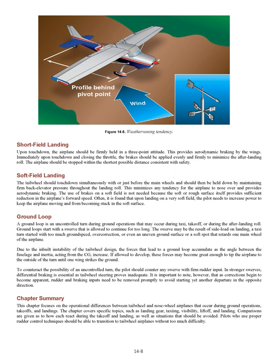Ground Loop: a ground loop is an uncontrolled turn during ground operations that may occur during taxi, takeoff, or during the after-landing roll. Ground loops start with a swerve that is allowed to continue for too long. The swerve may be the result of sideload on landing, a taxi turn started with too much ground speed, overcorrection, or even an uneven ground surface or a soft spot that retards one main wheel. Due to the inbuilt instability of the tailwheel design, the forces that lead to a ground loop accumulate as the angle between the fuselage and inertia — acting from the CG — increases. If allowed to develop, these forces may become great enough to tip the airplane to the outside of the turn until one wing strikes the ground. To counteract the possibility of an uncontrolled turn, the pilot should counter any swerve with firm rudder input. In stronger swerves, differential braking is essential as tailwheel steering proves inadequate. It is important to note that as corrections begin to become apparent, rudder and braking inputs need to be removed promptly to avoid starting yet another departure in the opposite direction.